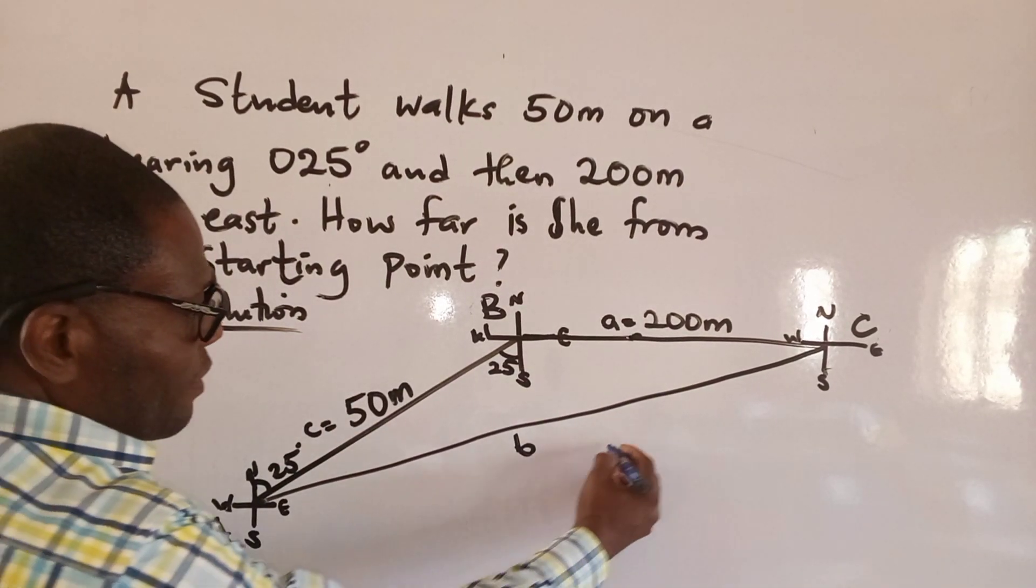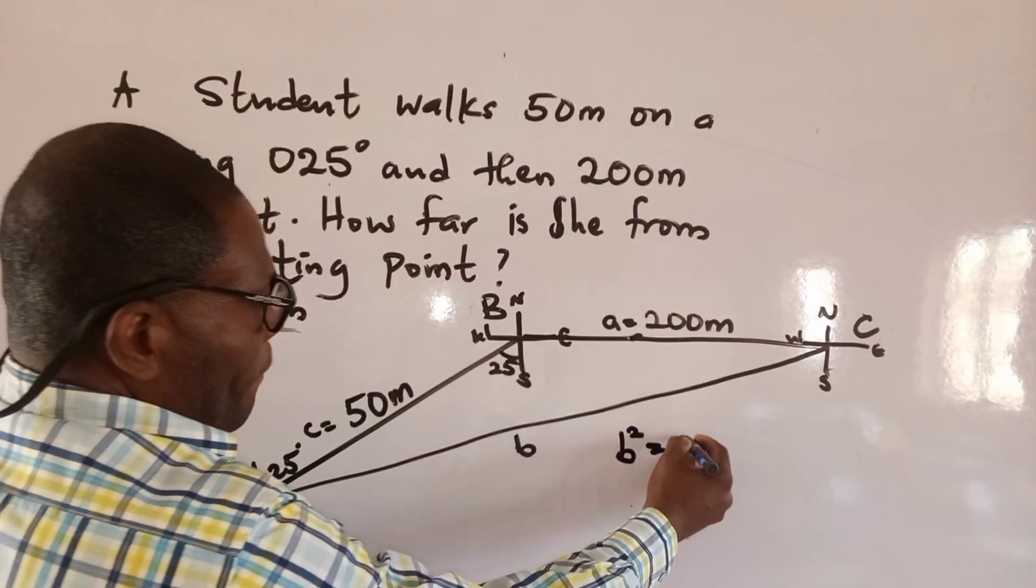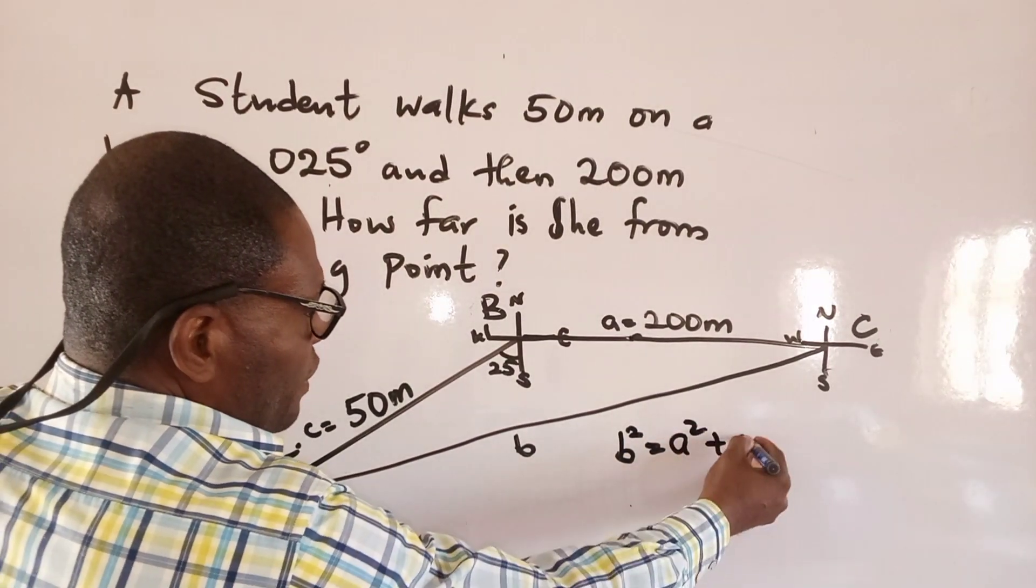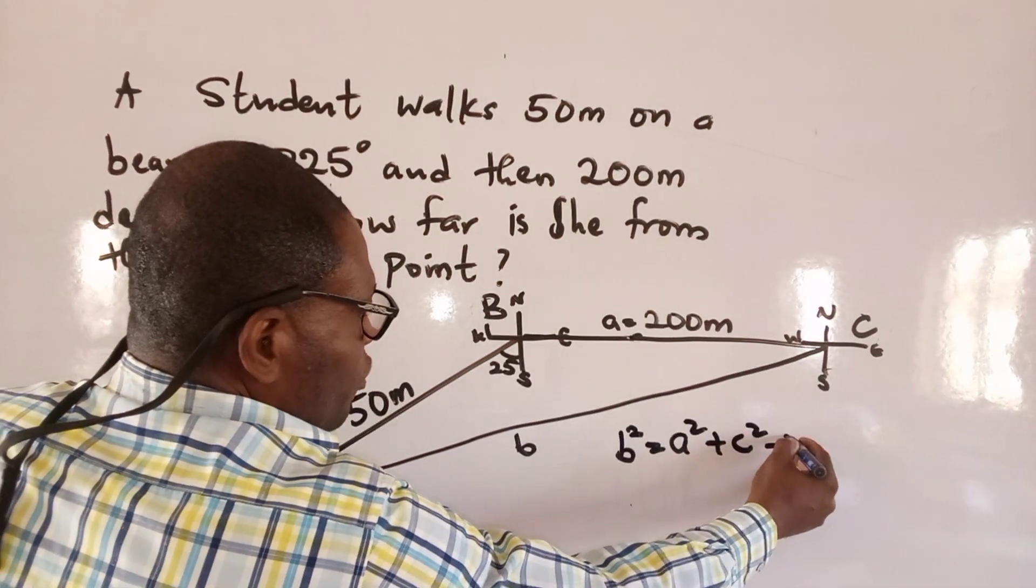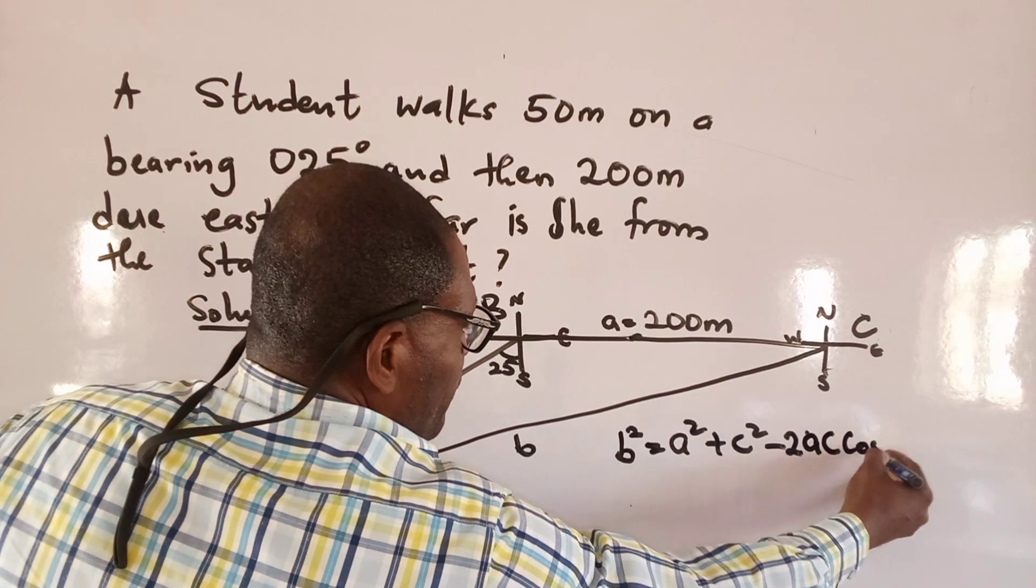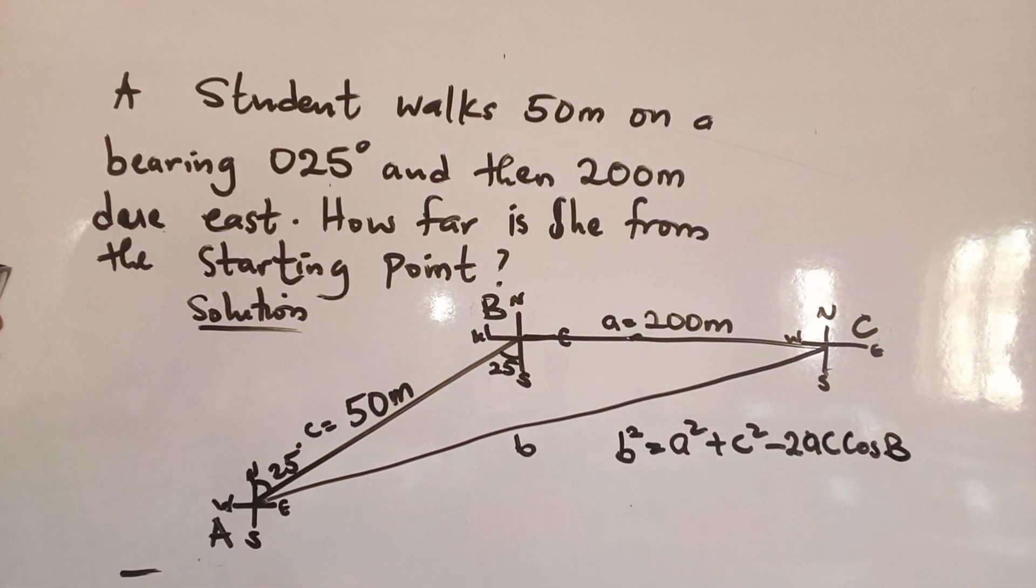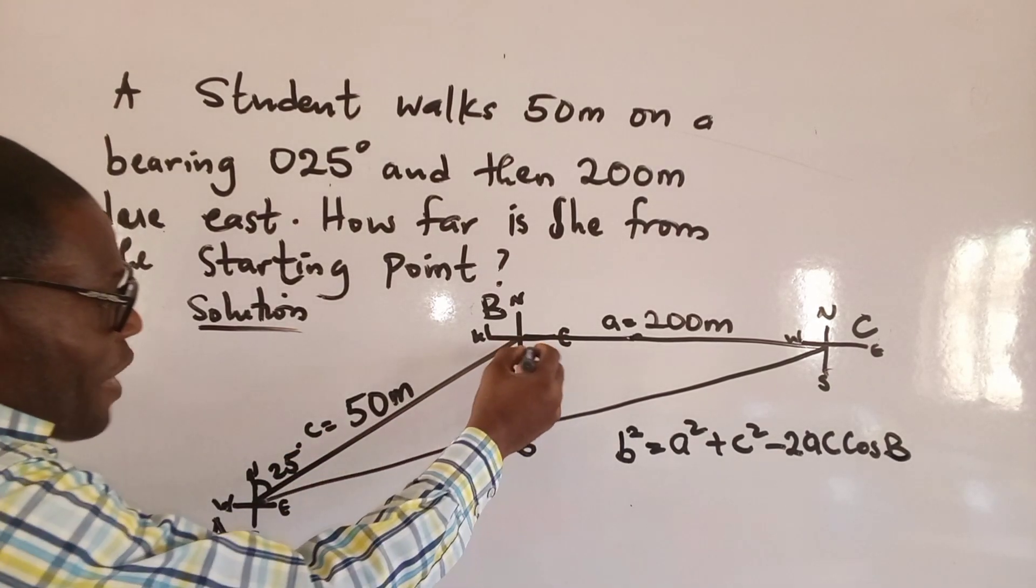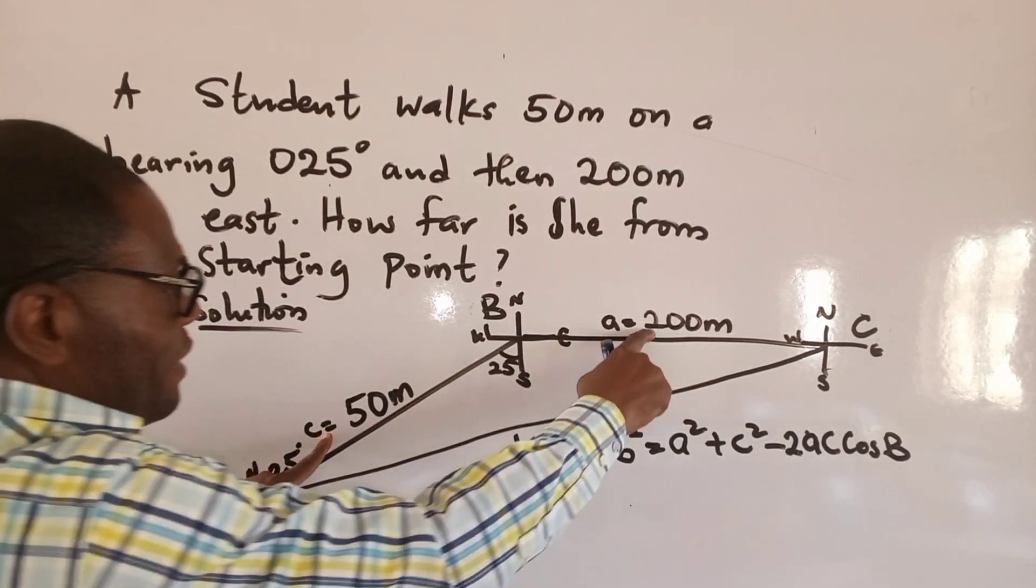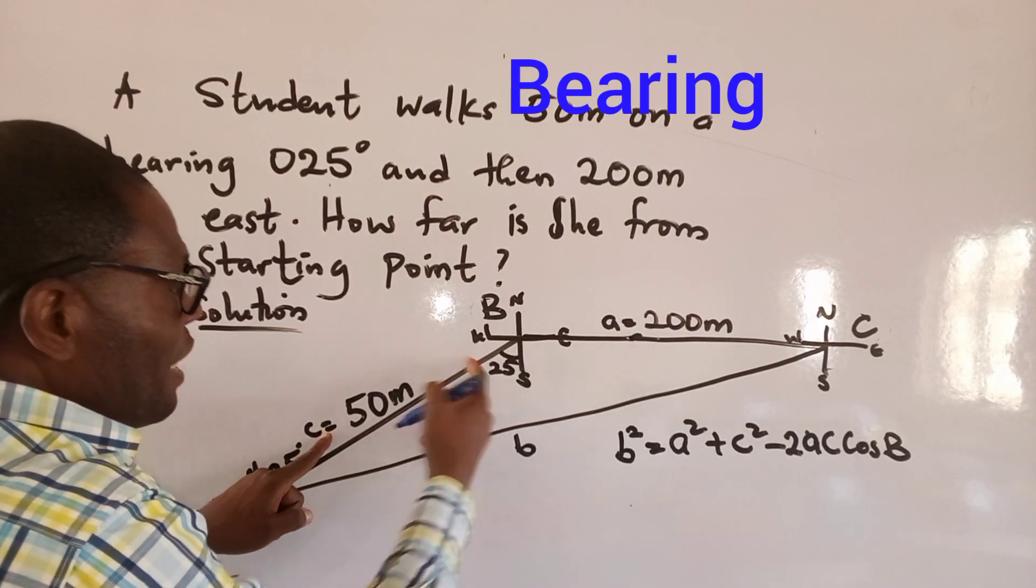So using the formula, we have b² equals to a² plus c² minus 2ac cos B. That is the formula for finding this included angle. So we want to find this included angle here. This is an included angle because this line and this line, this is the included angle of it.